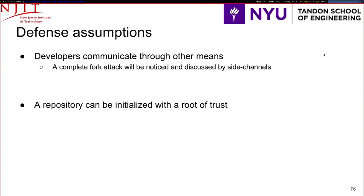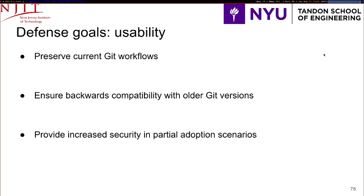Without further ado, I'll introduce our solution. We had three main goals. First, we wanted to preserve all Git workflows — whether someone is using git send-email to send a patch to a mailing list, or GitHub, or GitLab, that should work. We cannot make assumptions about how people use Git. We also align with Git's philosophy of supporting older versions and backwards compatibility — right now you can talk between Git 2.9.4 and 1.7.0. We also want to provide increased security in partial adoption scenarios, because not everyone will use our solution at the outset; we introduce it and it will provide greater benefits as people start using it.